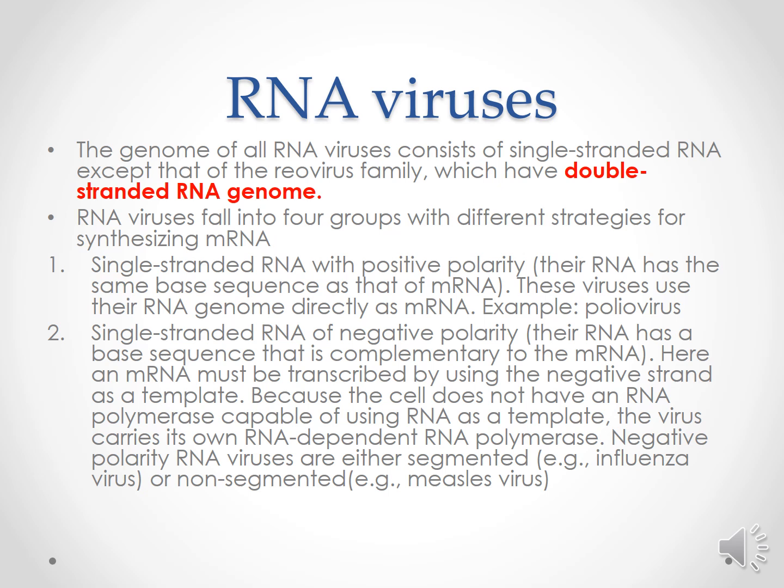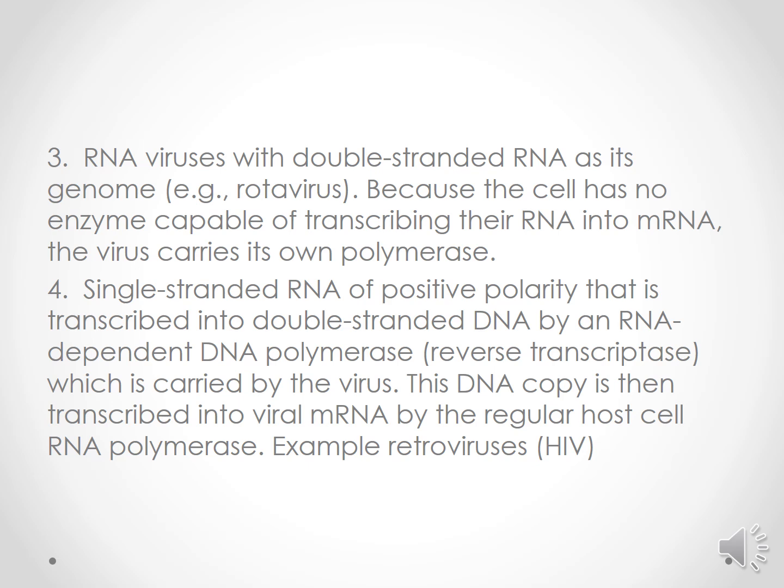Single-stranded RNA with positive polarity: the RNA has the same base sequence as that of mRNA; these viruses use their RNA genome directly as mRNA, for example poliovirus. Single-stranded RNA of negative polarity: the RNA has a base sequence complementary to the mRNA; here the mRNA must be transcribed using the negative strand as template. Because the cell does not have any RNA polymerase capable of using RNA as a template, the virus carries its own RNA-dependent RNA polymerase. Negative polarity RNA viruses may be segmented.